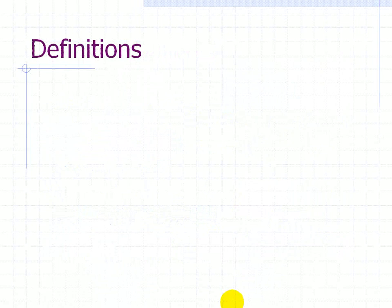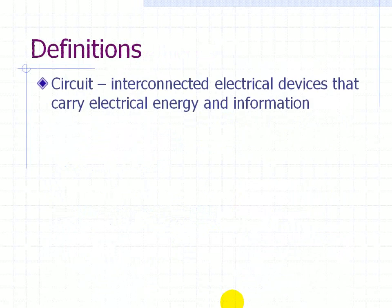So, let's start out with some simple definitions. First one is circuit, and we can think of a circuit as interconnected of a bunch of electrical devices that carry energy or information. Some of these devices that we'll talk about and analyze are resistors, capacitors, and inductors.